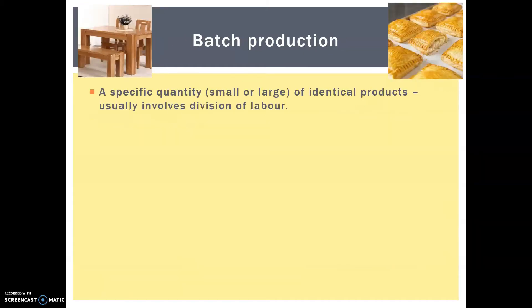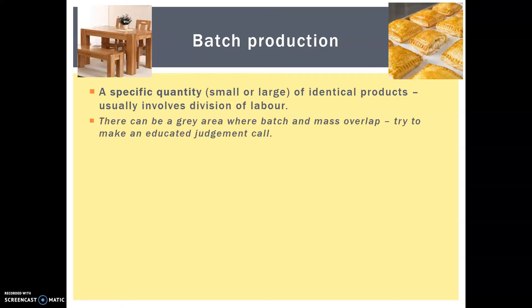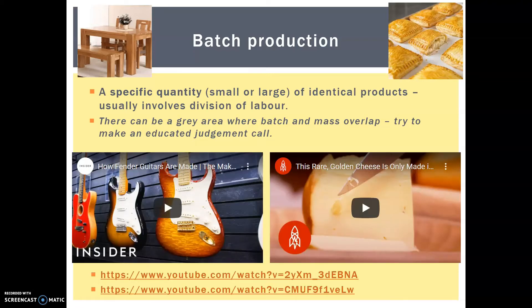Batch production is instead a specific quantity of identical products and usually involves division of labour. These batches can be small or really quite large, and it can be tricky sometimes to tell where batch and mass actually overlap — so sometimes it's really a judgment call. Here I have two more videos, one on Fender guitars and one on cheese. More interesting than you might think, give it a watch.